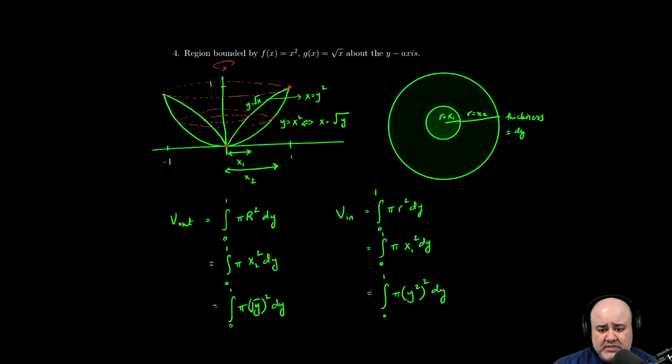If we were to use the washer method, we wouldn't have to do a volume of the outside shape separately and the volume of the inside shape separately. We can simply do, this is using washer,